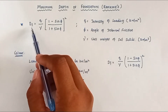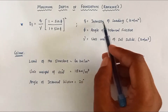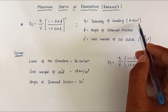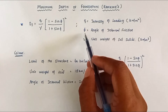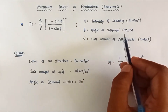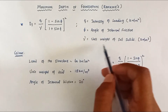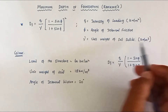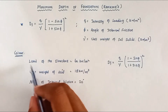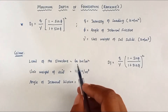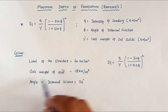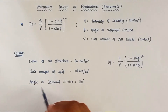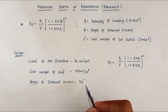Here, df is the depth of foundation, q is the intensity of loading from the structure in kN per meter square, φ is the angle of internal friction, and γ is the unit weight of soil in kN per meter cube. The given values are: load of the structure is 60 kN per meter square, unit weight of soil is 18 kN per meter cube, and angle of internal friction is 20 degrees.